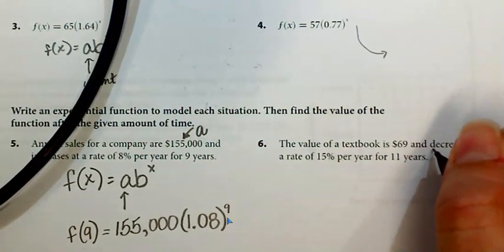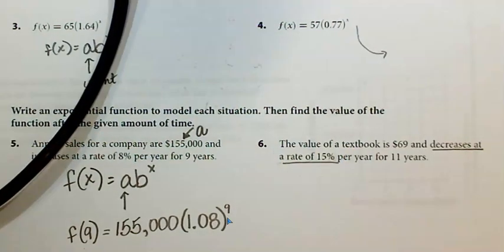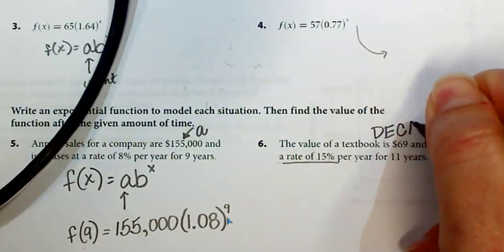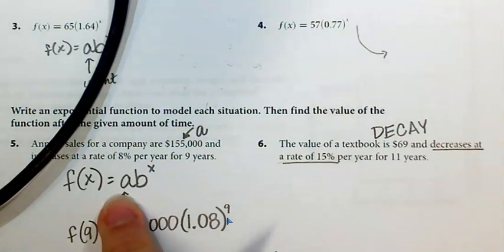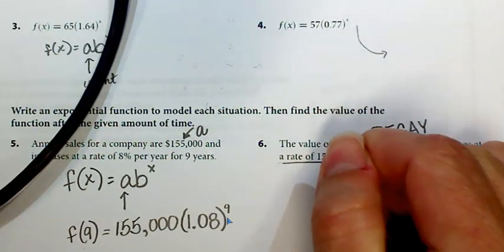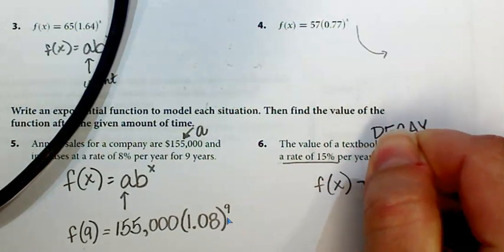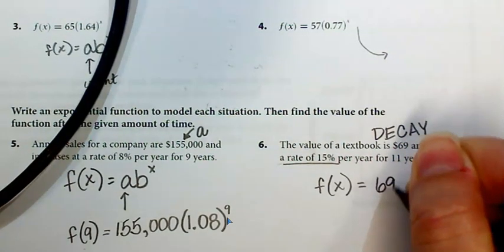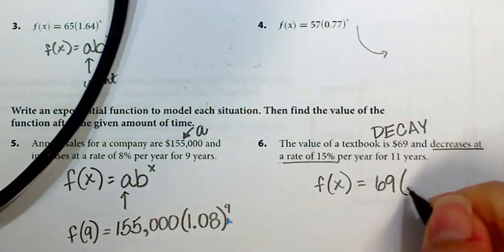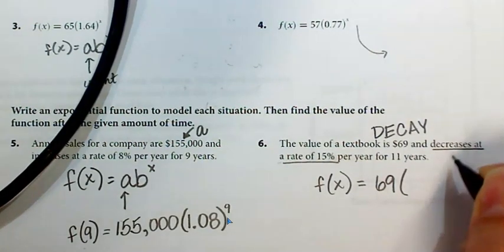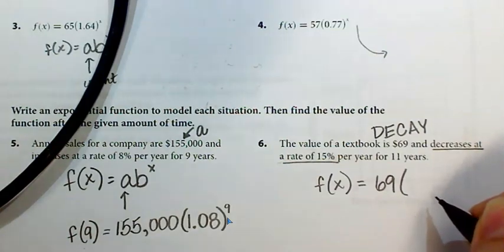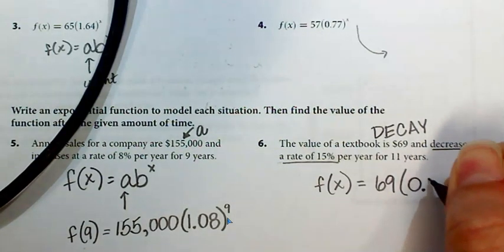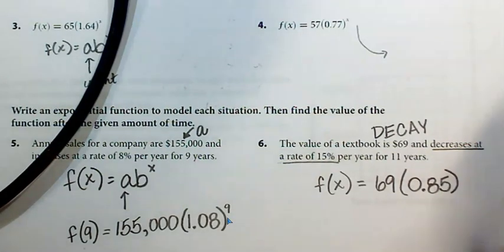So once again, hopefully the language of the problem, decreases at a rate of 15%, tells you that this is an exponential decay, meaning that the value is going down over time, whereas 5 was an exponential growth. f(x) equals a times b to the x. a is your initial value, like before any time goes by. And then in here, because it's decreasing, I'm going to take 1.00 and subtract the 15%, so 1.00 minus 0.15, and that gives me 0.85. And I want to know the value of this textbook after 11 years if it declines at a rate of 15% per year.